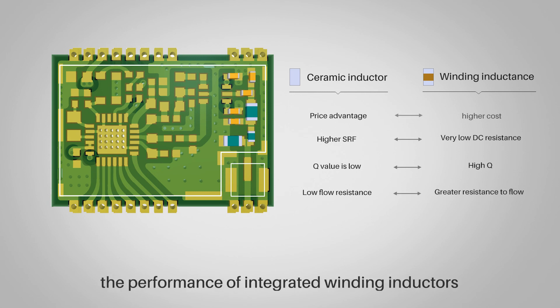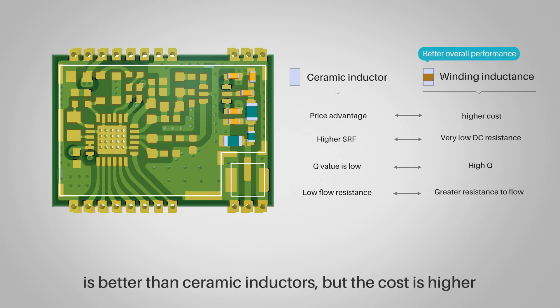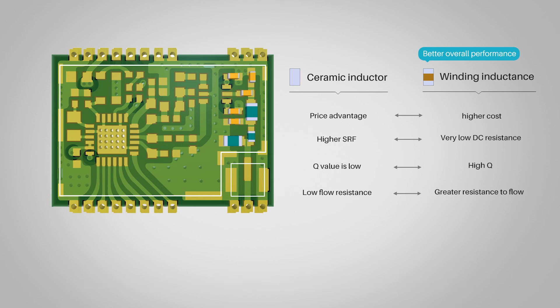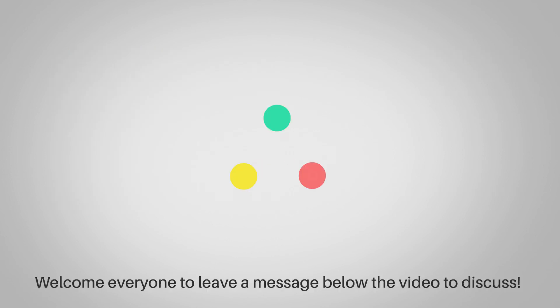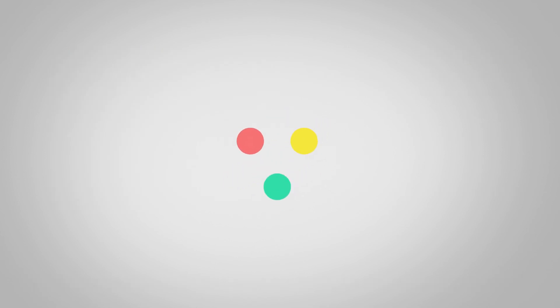Rule five: Winding inductors have extremely low DC resistance, high Q value, and greater resistance to current. The performance of integrated winding inductors is better than ceramic inductors, but the cost is higher. The rules for using capacitors and inductors are introduced here — welcome everyone to leave a message below the video to discuss.